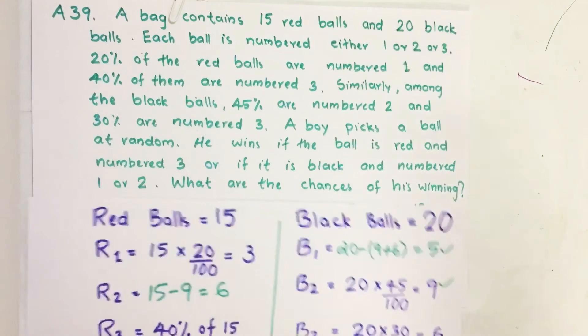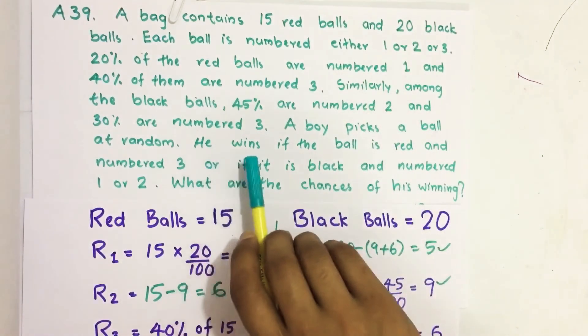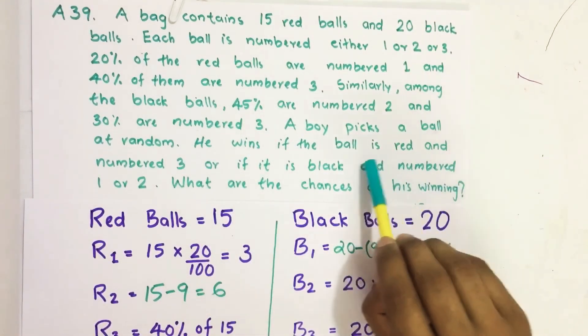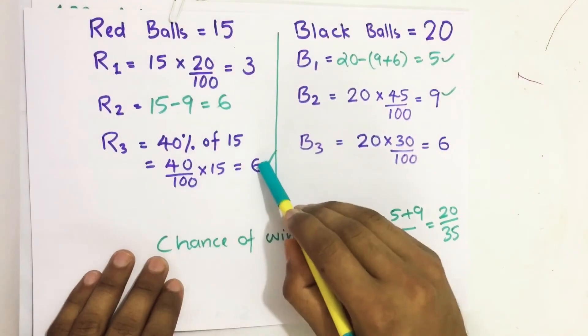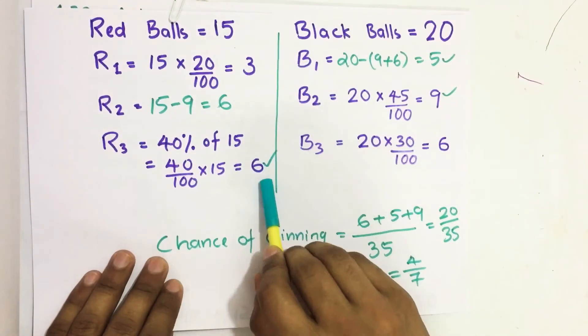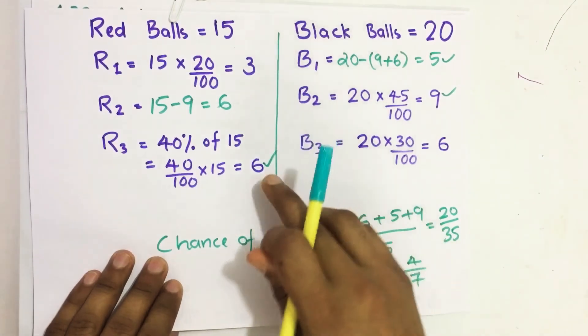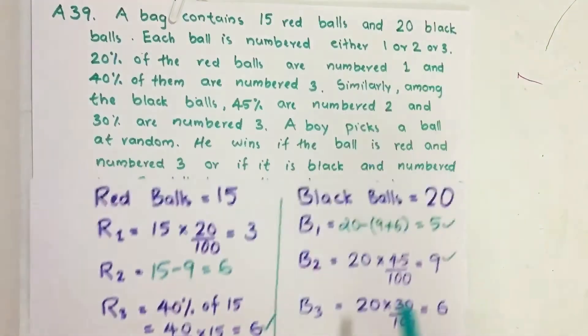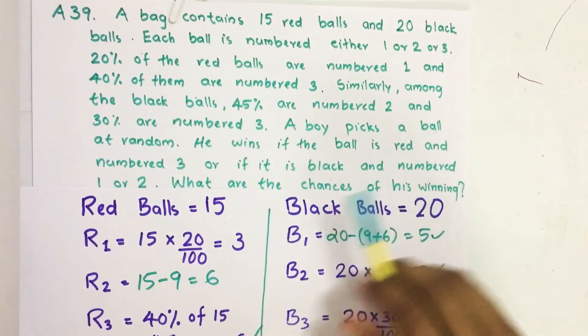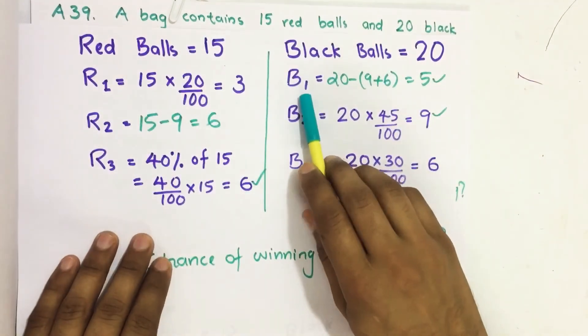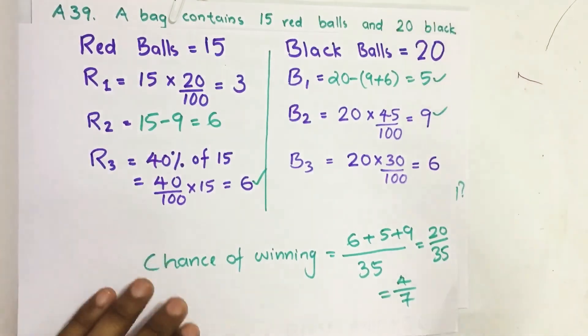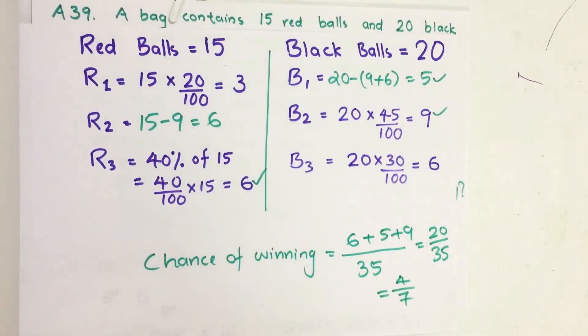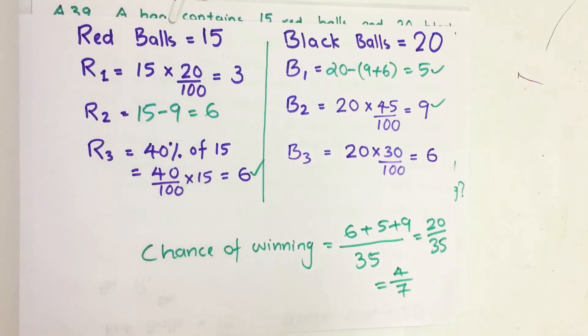And then, they are saying if the boy picks red balls numbered 3, that is, if he is picking any of these 6 balls, or if it is black and numbered 1 or 2, he will win. So, what is the chance of winning?